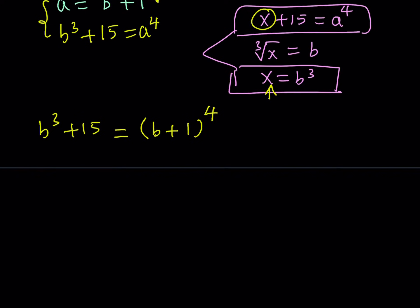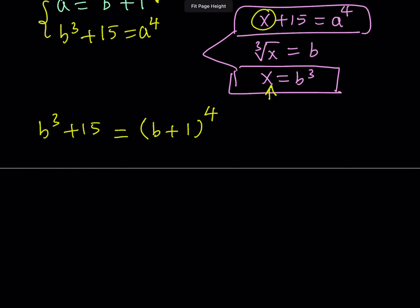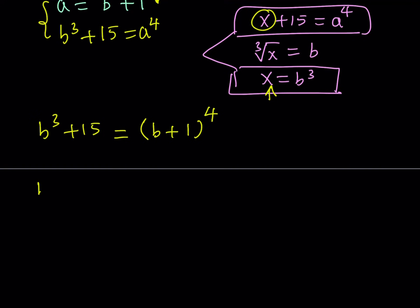So, the right-hand side, which I'm going to write on the left-hand side. So, the right-hand side becomes the left-hand side and the left-hand side becomes the right-hand side. So, that way, we're going to get something like this. B to the 4th plus 4B cubed plus 6B squared plus 4B plus 1 is equal to B cubed plus 15.